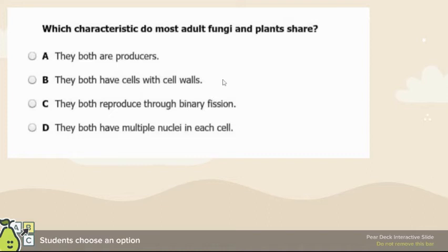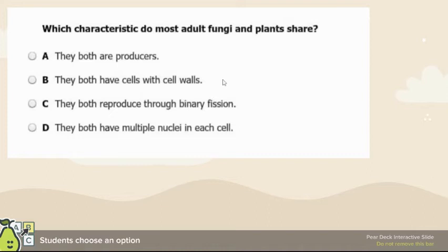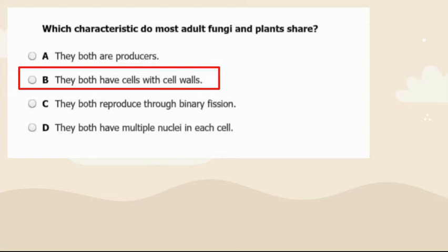Fungi and plants both have cell walls, except fungi have chitin in their cell walls and plants have cellulose in their cell walls.